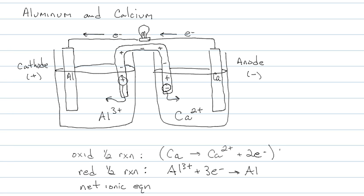We have to make sure we gain and lose the same number of electrons. So three CAs plus two Al three pluses gives three Ca two pluses plus two Al's. So that takes care of a voltaic cell where a chemical reaction produces electricity.